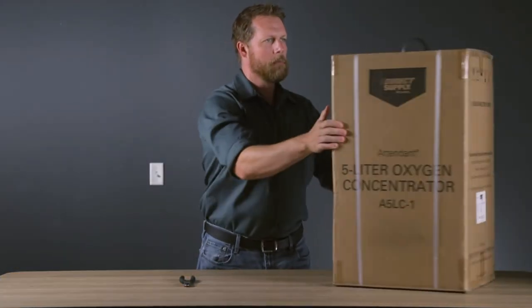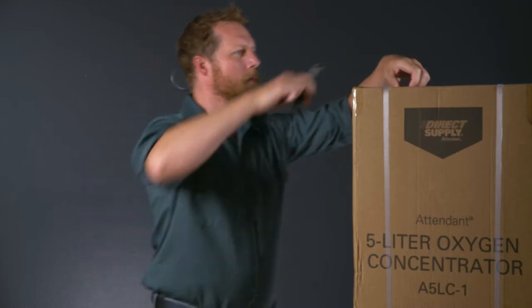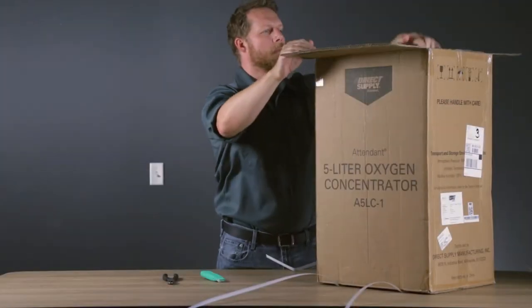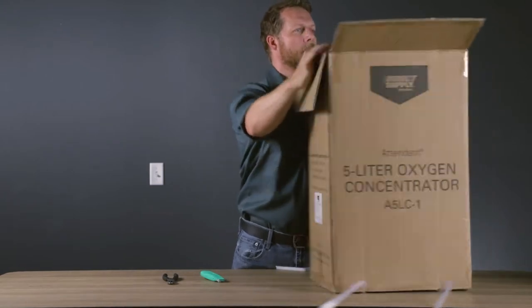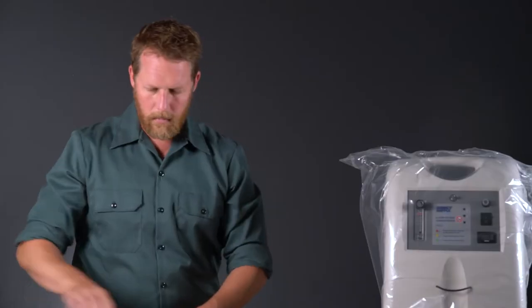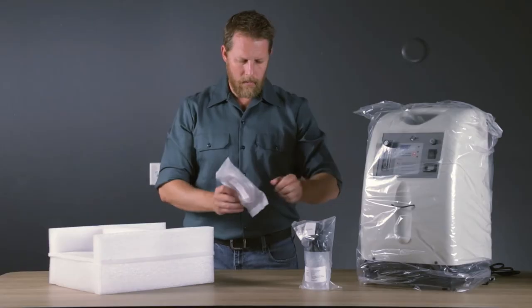When unpacking the concentrator, check for any obvious damage to the carton or its contents. If damage to the concentrator is evident, notify your Direct Supply Account Manager. Remove all loose packing from the carton, then carefully remove all the components of the device. Inspect all accessories for damage as well.